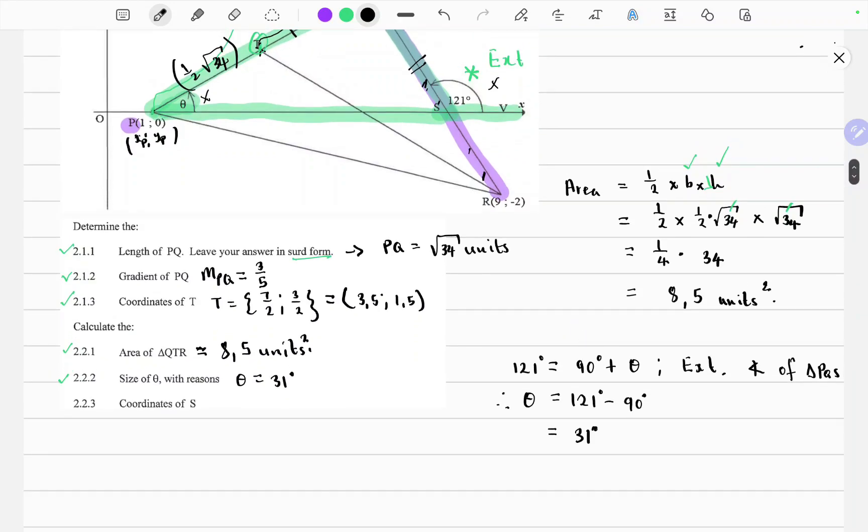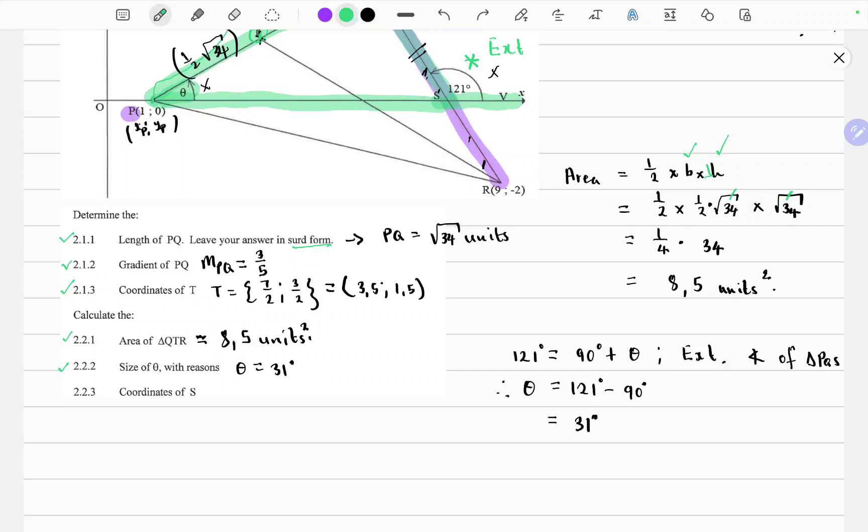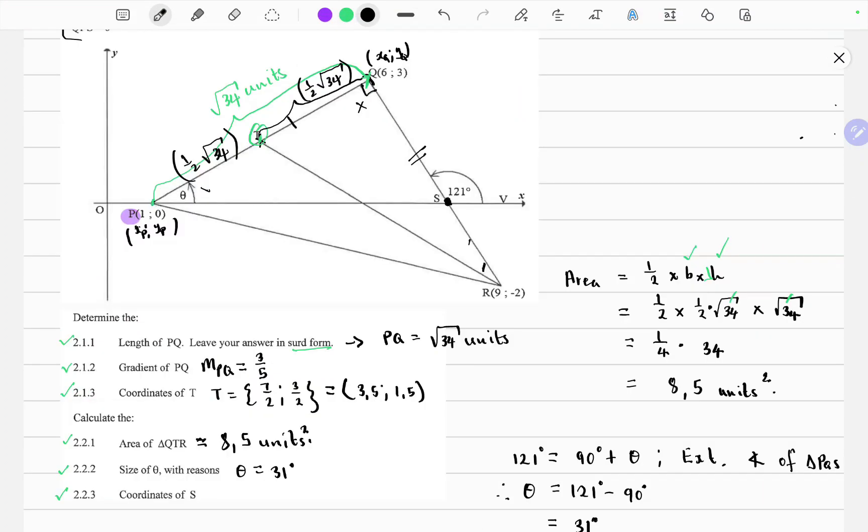So the last question wants us to calculate the coordinates of S. So the question wants us to find these coordinates S. So we know already from what we can see by inspection, this triangle is a right triangle. Another important bit of information is we have this distance. We've worked it out to be square root of 34. We have angle theta to be 31 degrees.